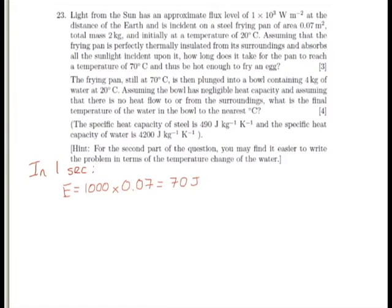Now we can work out how much energy is needed by the frying pan in order to allow it to reach 70 degrees and to fry the egg. So we can use E equals MC delta theta. So the mass of the frying pan is 2 kilograms. The specific heat capacity C is 490, and the change in temperature is 70 take away 20, which is 50 degrees.